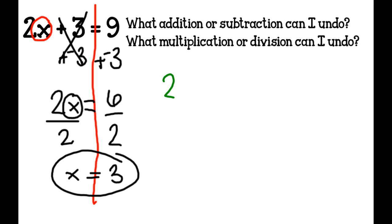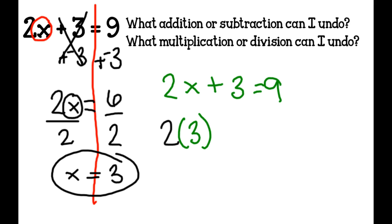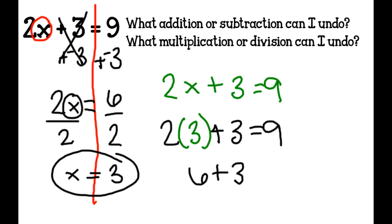I'm going to check it. I write the original problem: 2x + 3 = 9. It's telling me x = 3, so I plug it in: 2 times 3 plus 3 equals 9. I simplify using GEMDAS — multiplication first: 2 times 3 is 6, plus 3 equals 9, and 6 plus 3 is 9 equals 9. That's correct, so I did the problem correctly and x equals 3.